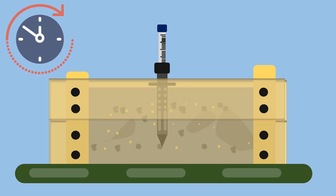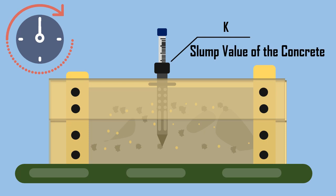After 60 seconds, lower the measuring rod slowly until it rests on the surface of the mortar that entered the tube. Now note down the value on the graduated scale. Take it as K, which denotes the slump value of the concrete.